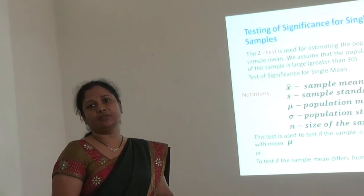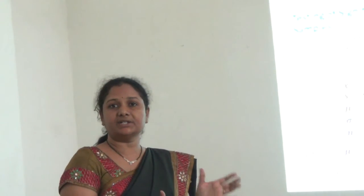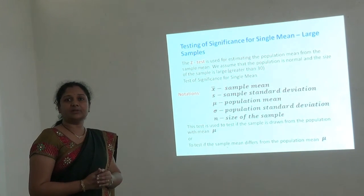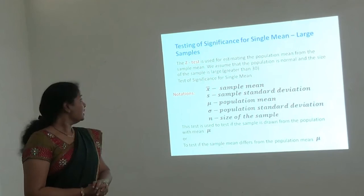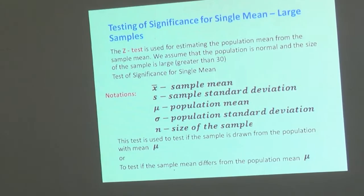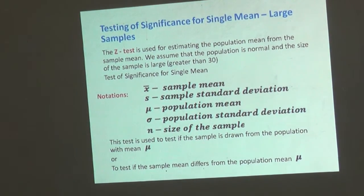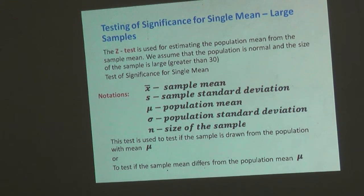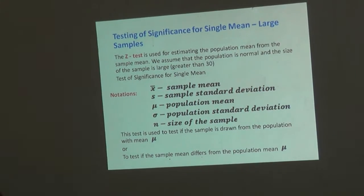These are the basic fundamentals for any testing of hypothesis. Under testing of hypothesis, we basically have large and small samples. In every sample we have testing of single mean, difference of mean, paired data, goodness of fit, and many other tests. But today we will focus on testing of significance for single mean in large samples. Another way of telling it is: we test whether the sample mean differs from the population mean. For that we use a test called Z test. The Z test is used for estimating the population mean from the sample mean. We assume that the population is normal and the size of the sample is large, say greater than 30. The notation we use is: X-bar is the sample mean, S is the sample standard deviation, mu is the population mean, sigma is the population standard deviation, and N is the size of the sample. This test is used to test if the sample is drawn from the population with mean mu, or to test if the sample mean differs from the population mean mu.